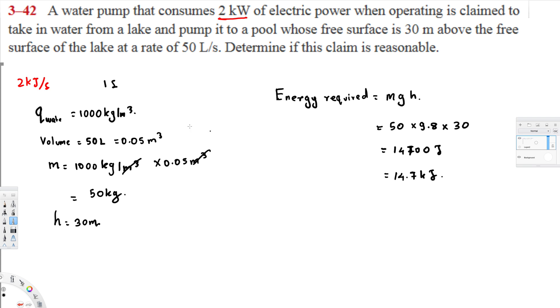And here we're considering one second - in one second, how much energy is required? So it's going to be 14.7 kilojoules per second. So we need 14.7 kilojoules per second.